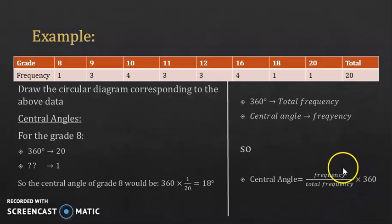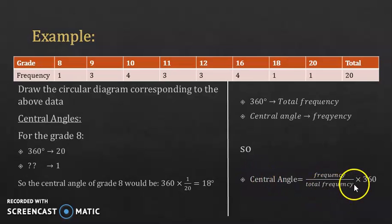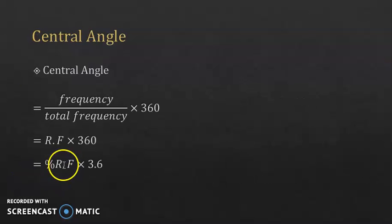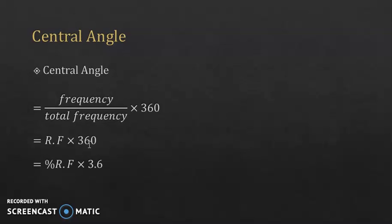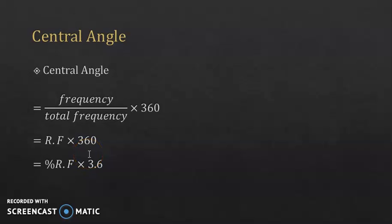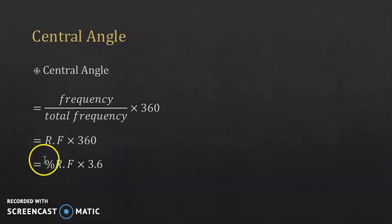Notice that frequency over total frequency is the relative frequency. So the central angle is also the relative frequency times 360. And since 360 = 3.6 × 100, and 100 times relative frequency gives relative frequency in percentage, you can use any of these three equivalent forms: frequency/total frequency × 360, or relative frequency × 360, or relative frequency in percentage × 3.6 — depending on which values you have in your table.